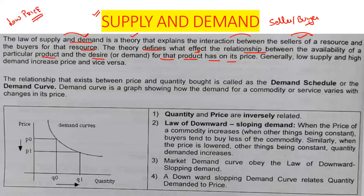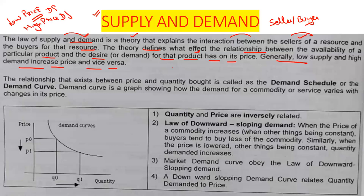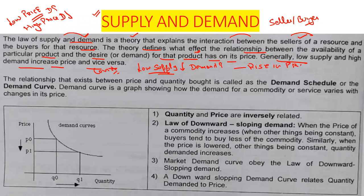Generally, if there is a low price there is more demand, and if there is a high price there is less demand. The relationship is that low supply and high demand increases price, and vice versa. For example, in the time of COVID there was less supply of sanitizer and more demand, which led to a rise in price. More supply and less demand leads to a decrease in price.